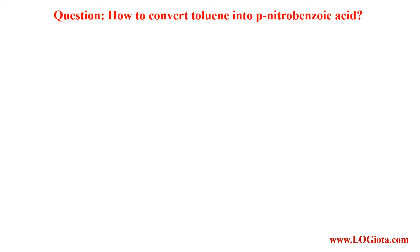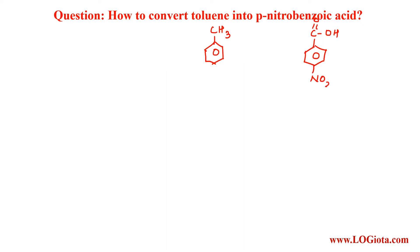The question is how to convert toluene into paranitrobenzoic acid. The structure of toluene is benzene with a CH3 group, and the structure of paranitrobenzoic acid is benzene having a COOH group as well as one nitro group at the para position. So, we need to convert toluene into paranitrobenzoic acid.